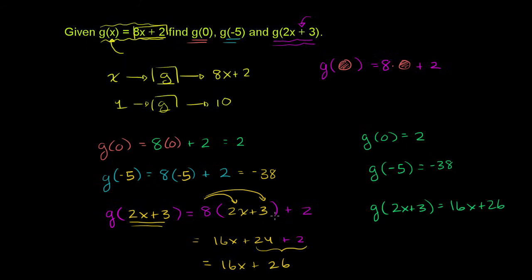And we're done. I know it's going to be confusing because you're replacing x with something that has x in it. But you really should just view this as if it was an orange ball or a star — or even if it had y's in it. Wherever you see an x, you replace it with whatever you are inputting. In every instance, we replace the x with 2x plus 3.